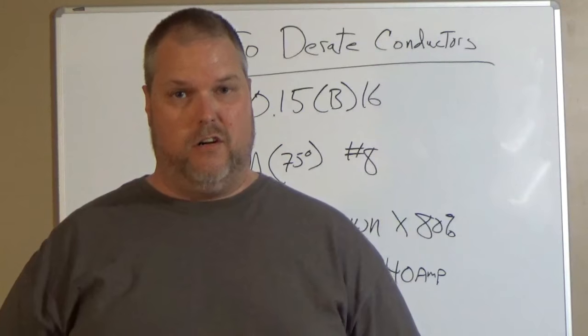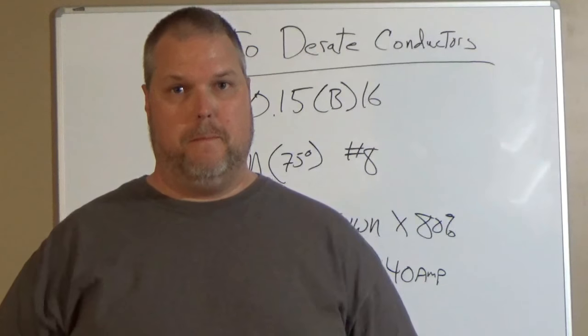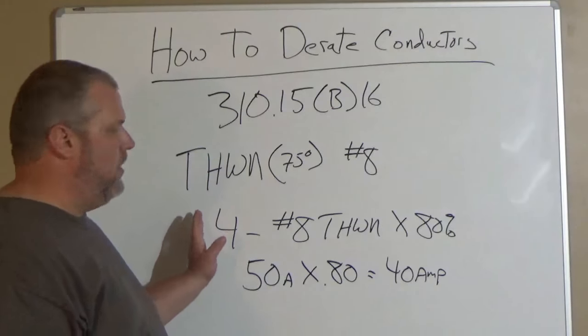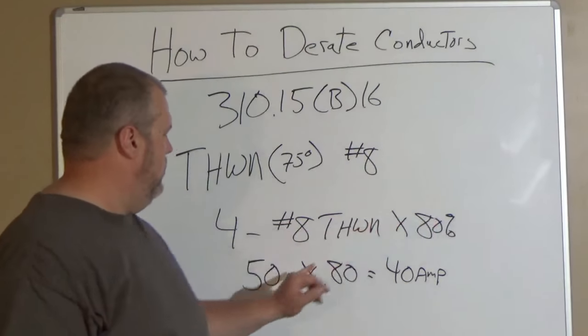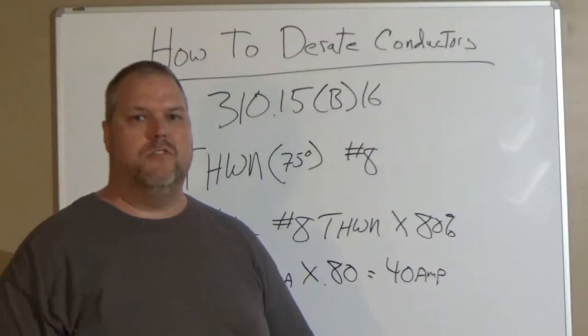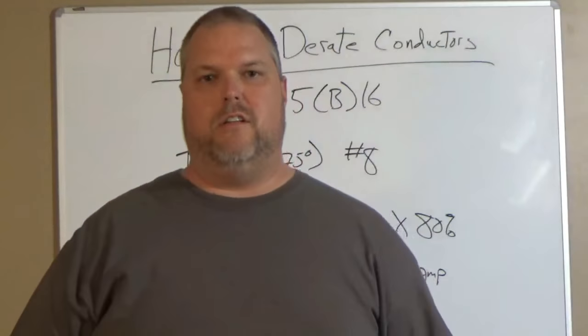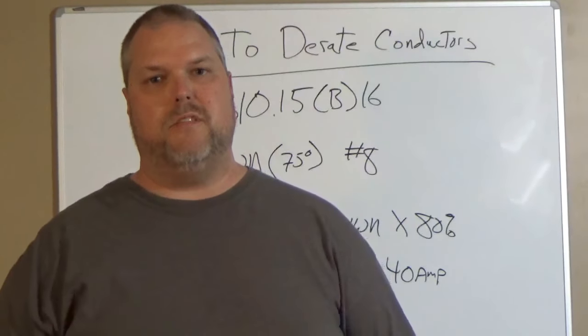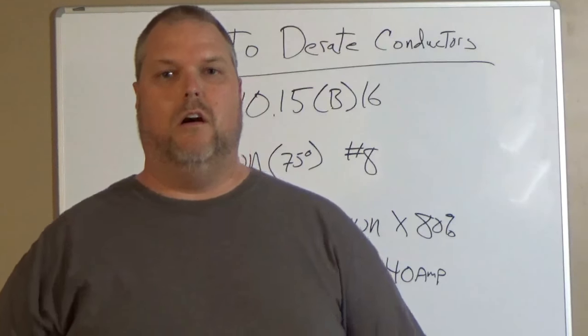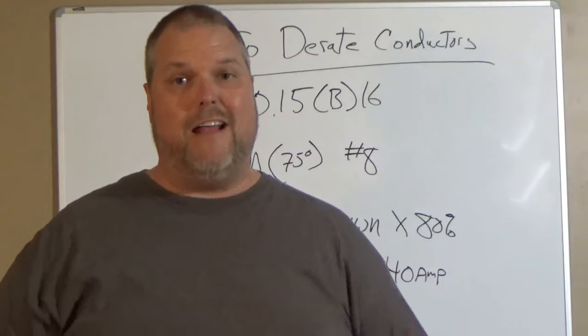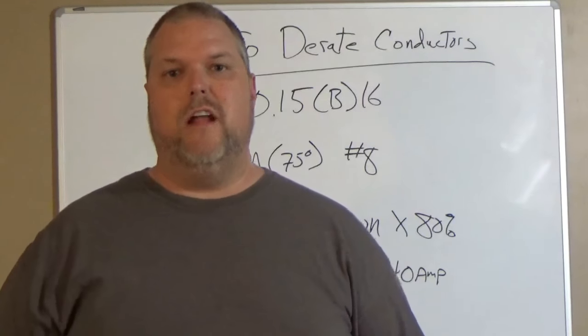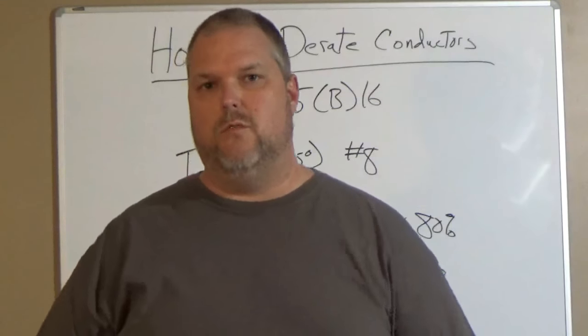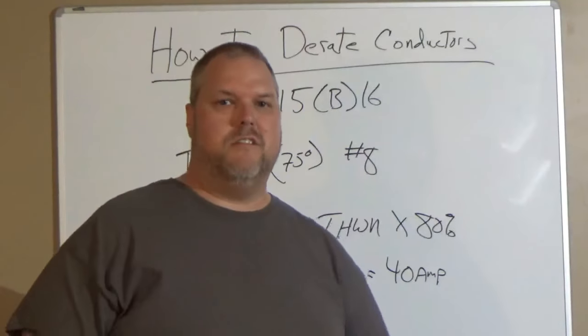So any current-carrying conductor has to be counted. So now that we understand that, we take our four conductors, we take our THHN, we know that it's 50 amps, we take it at 80 percent, and now our conductor is good. So now we may have to upsize. We may have to go to another size wire if I need 50 amps. If it's only rated for 40, I'm going to have to bump up a size or two. This is something we'll talk about in other videos. Let's do another example.